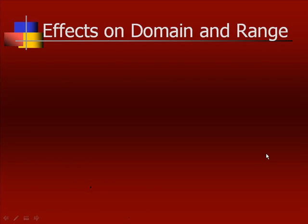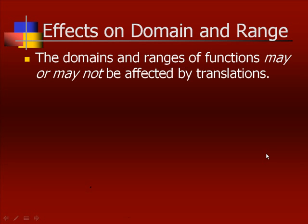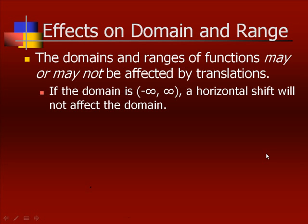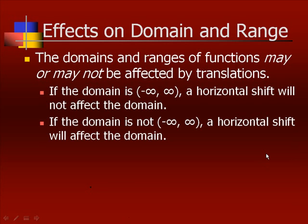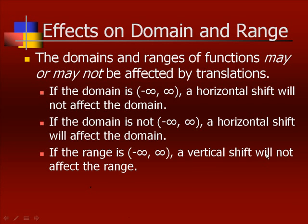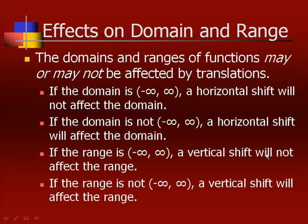How does that affect the domain and the range? The domains and ranges of functions may or may not be affected by translations. If the domain is negative infinity to infinity, then a horizontal shift is not going to affect that domain. If the domain is not all real numbers, then the horizontal shift will affect the domain. If the range is negative infinity to infinity, a vertical shift will not affect the range. But if it's not all real numbers, then a vertical shift will.